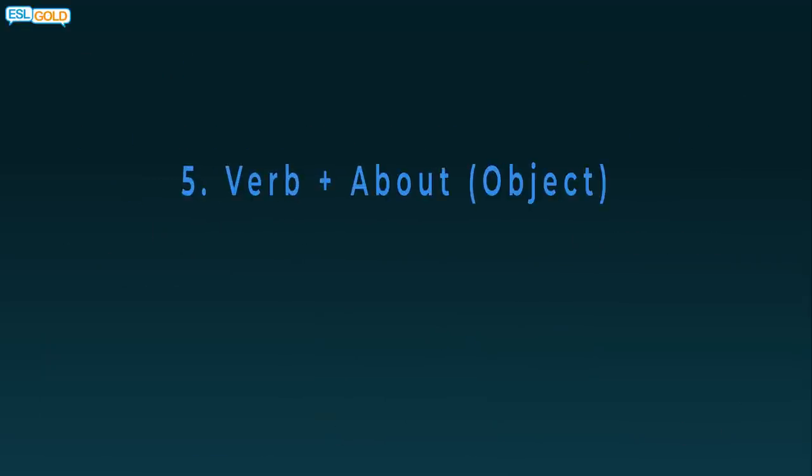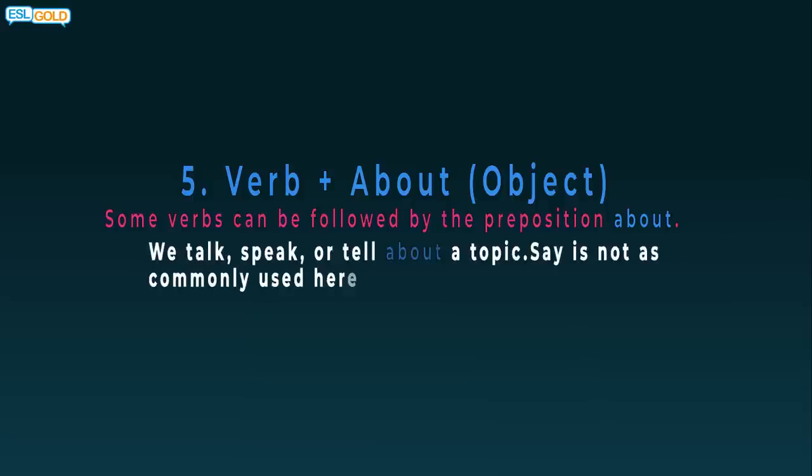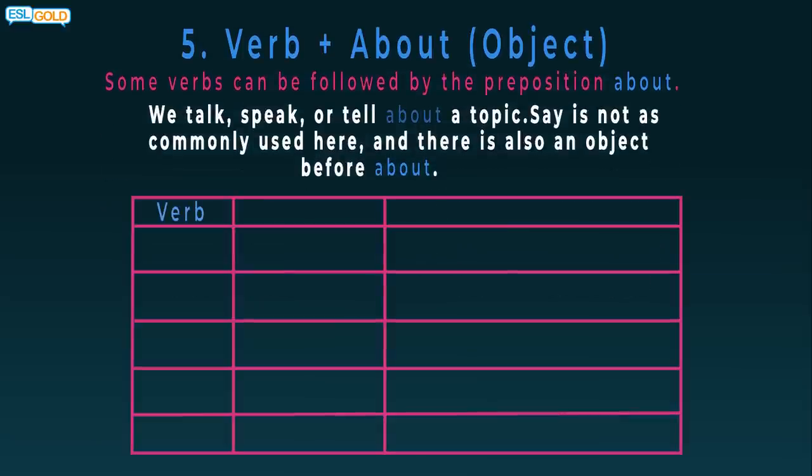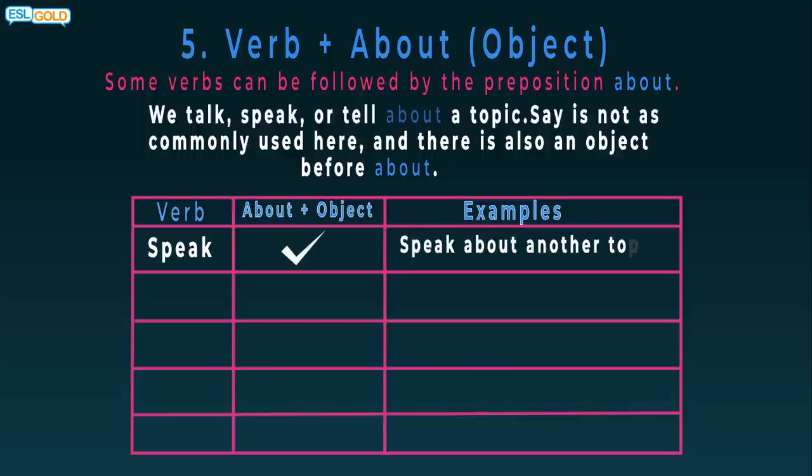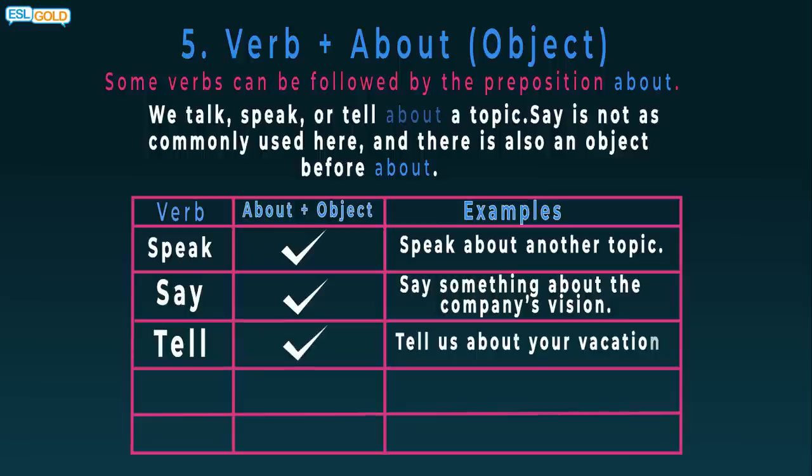5. Verb plus about an object. Some verbs can be followed by the preposition about. We talk, speak, or tell about a topic. Say is not as commonly used here, and there is also an object before about. Speak: yes. Speak about another topic. Say: yes. Say something about the company's vision. Tell: yes. Tell us about your vacation. Discuss: no. Talk: yes. Talk about a controversial issue. Don't say discuss about.